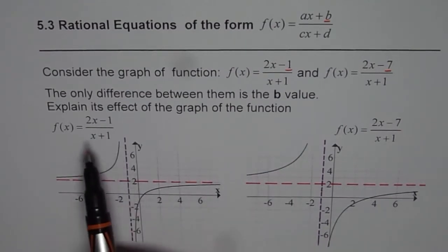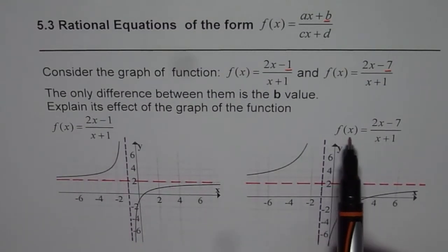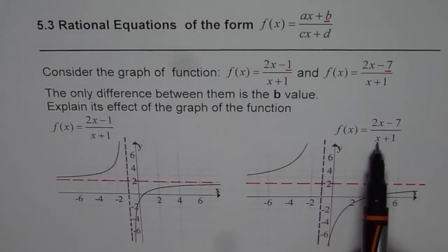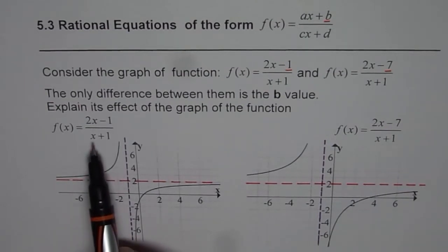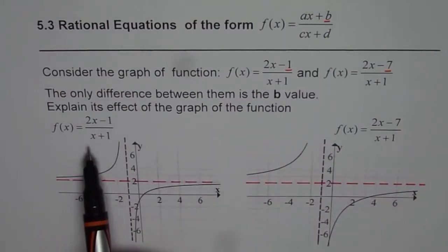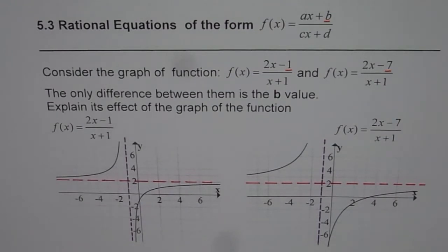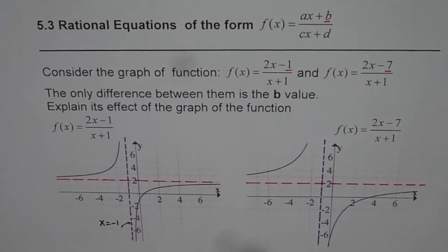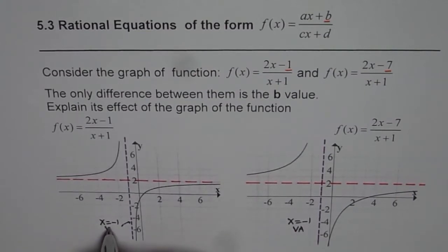So what we have here is f of x equals 2x minus 1 divided by x plus 1, and on this side f of x equals 2x minus 7 divided by x plus 1. These are the two graphs. Let's compare them by checking the vertical asymptotes. Since their denominators are the same, the c and d values are the same, so their vertical asymptotes are exactly the same — at x equals minus 1. Here this line is at x equals minus 1, and here also x equals minus 1 is the vertical asymptote.